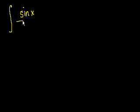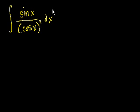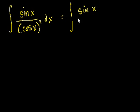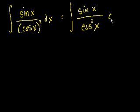The problem he sent me — and I hope I pronounced his name right — was the indefinite integral of sine of x over the cosine of x squared dx. This could also be written as sine of x over cosine squared of x. Sometimes it's written like that. Either way, I like looking at this form — it's a little bit less ambiguous.